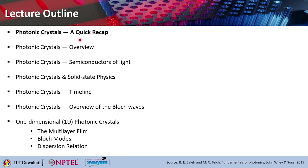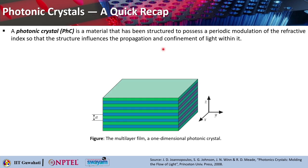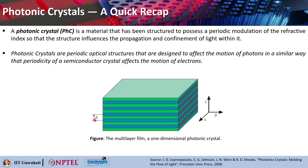Looking into the first topic, which is a quick recap: a Photonic Crystal is basically a material that has been structured to possess a periodic modulation of the refractive index, so that the structure influences the propagation as well as confinement of light within it. The picture here shows the multi-layer film, which is basically a one-dimensional photonic crystal. You can see the green and the blue material — they are two different types of material, and they have been repeated periodically along the z direction. Here, 'a' marks the period of this periodicity of the structure.